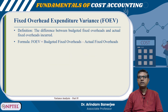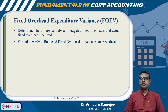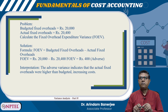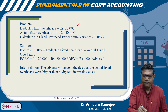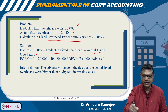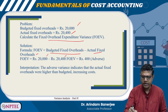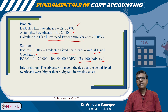Fixed overhead expenditure variance is defined as the difference between the budgeted fixed overheads and actual fixed overheads incurred. The formula is: budgeted fixed overhead minus actual fixed overheads. Here is a problem. Budgeted fixed overhead is 20,000 and actual fixed overhead is 20,400. Since actual is more than budgeted, it is adverse 400. The adverse variance indicates that the actual fixed overheads were higher than the budgeted, increasing costs.